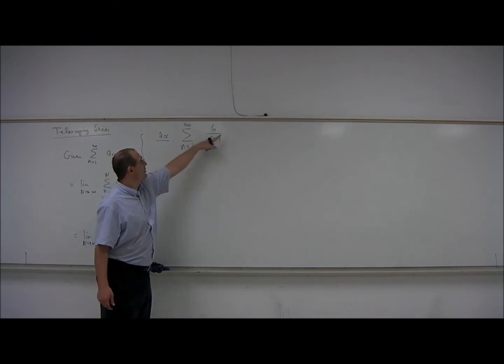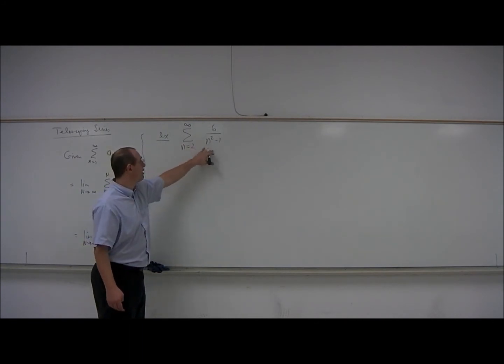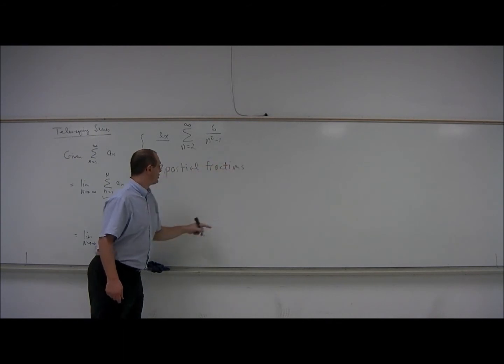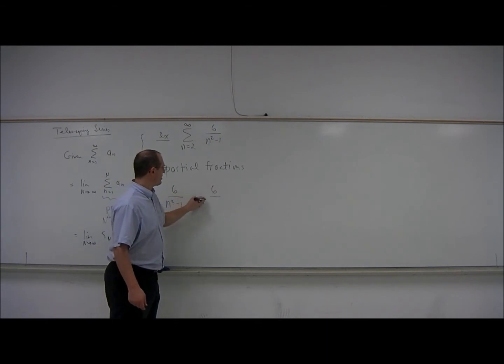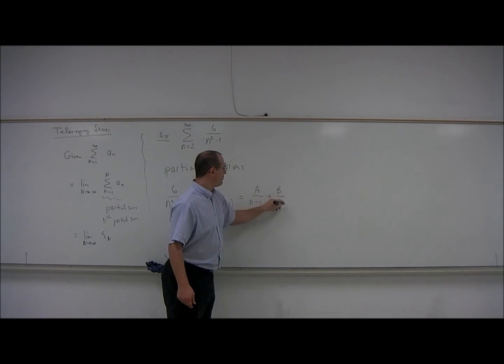Now it turns out that these fractions can be decomposed using partial fractions into something that gives an interesting property when we start adding them up. So let's use partial fractions - nothing to do with partial sums. Partial fractions, 6 over n squared minus 1. Of course, the denominator factors into n minus 1 times n plus 1. So this is going to split up into a over n minus 1 plus b over n plus 1.